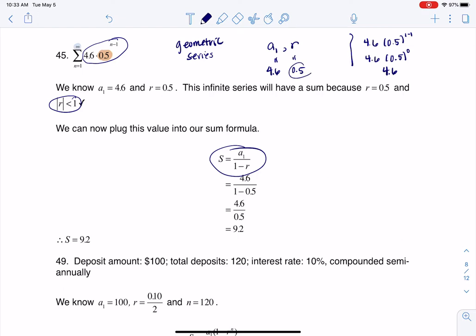And just taking a look at this r value, its absolute value is less than 1 because its absolute value is 1 half, and 1 half is less than 1, which means this series converges, which means I can use this formula.